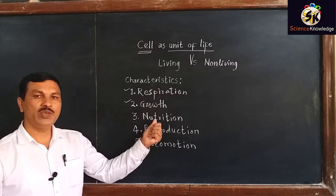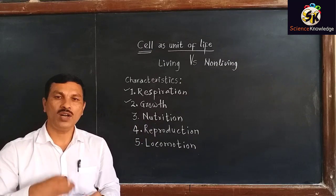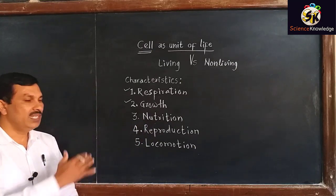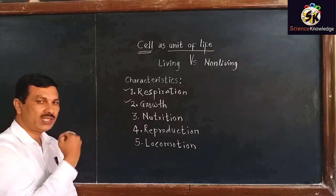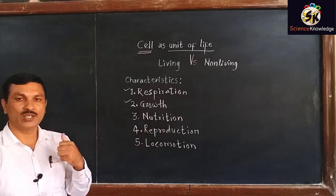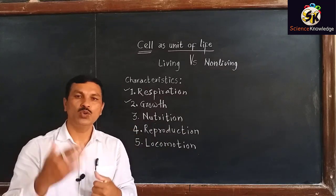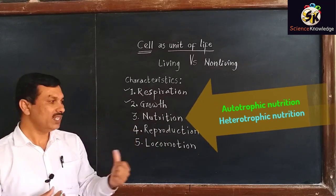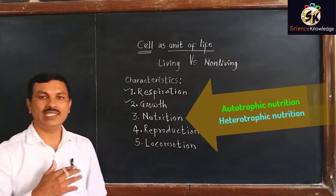The living organisms will also need nutrition because for all their physiological activities they will need energy. This energy is provided by food, and this absorption or production of food is called as nutrition. Accordingly, the living organisms may produce their own food — autotrophic, for example the plants — or they may acquire nutrition from other sources, that is heterotrophic.